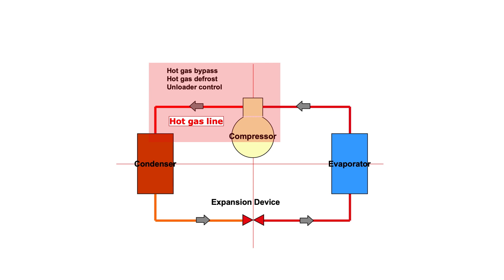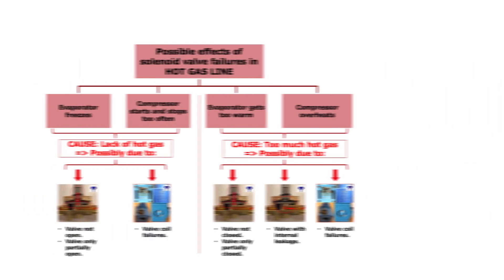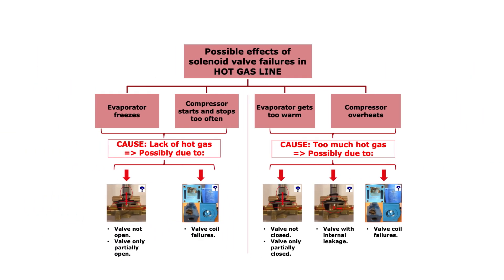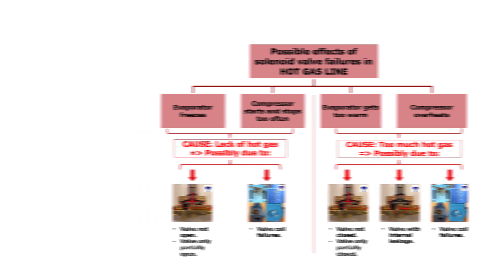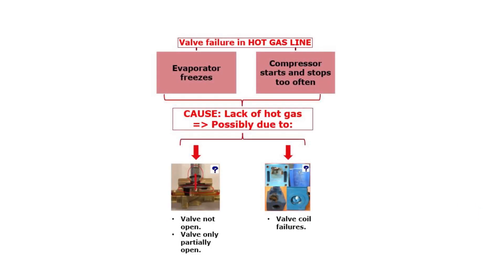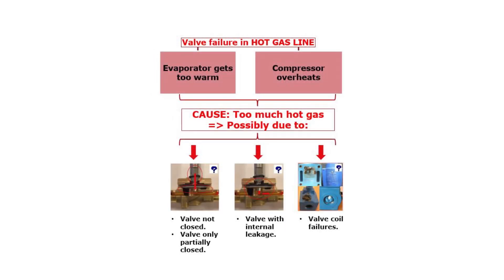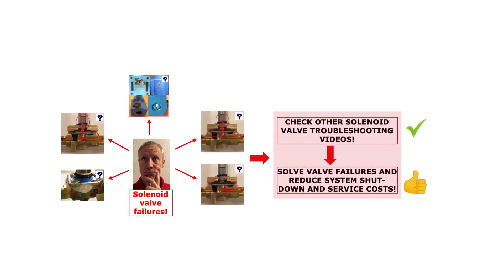Looking at the hot gas line as illustrated here, you normally use solenoid valves for hot gas bypass, hot gas defrost, and unloader control. Here you see an overview of how possible solenoid valve failures might affect the refrigeration system when the valve is located in the hot gas line. The evaporator freezes and or compressor starts and stops too often — caused by lack of hot gas due to the valve not opening or only being partially open, or the valve coil is not working correctly. The evaporator gets too warm and or compressor overheats — caused by too much hot gas due to the valve not closing or only being partially closed, the valve is internally leaking, or the valve coil is not working correctly. Check out the other online solenoid valve troubleshooting videos to get more details and how to solve them to efficiently reduce system shutdown and service costs.